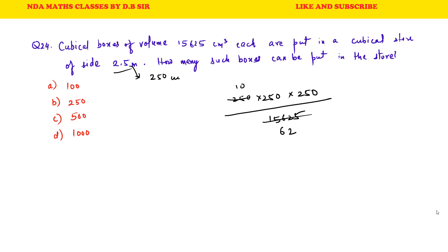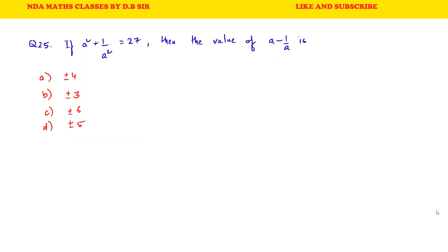To solve this, we find the cube root of 15,625, which is 25 cm. The store side is 2.5 meters = 250 cm. Number of boxes along each side = 250 ÷ 25 = 10. So total boxes = 10 × 10 × 10 = 1000. This is the correct answer.